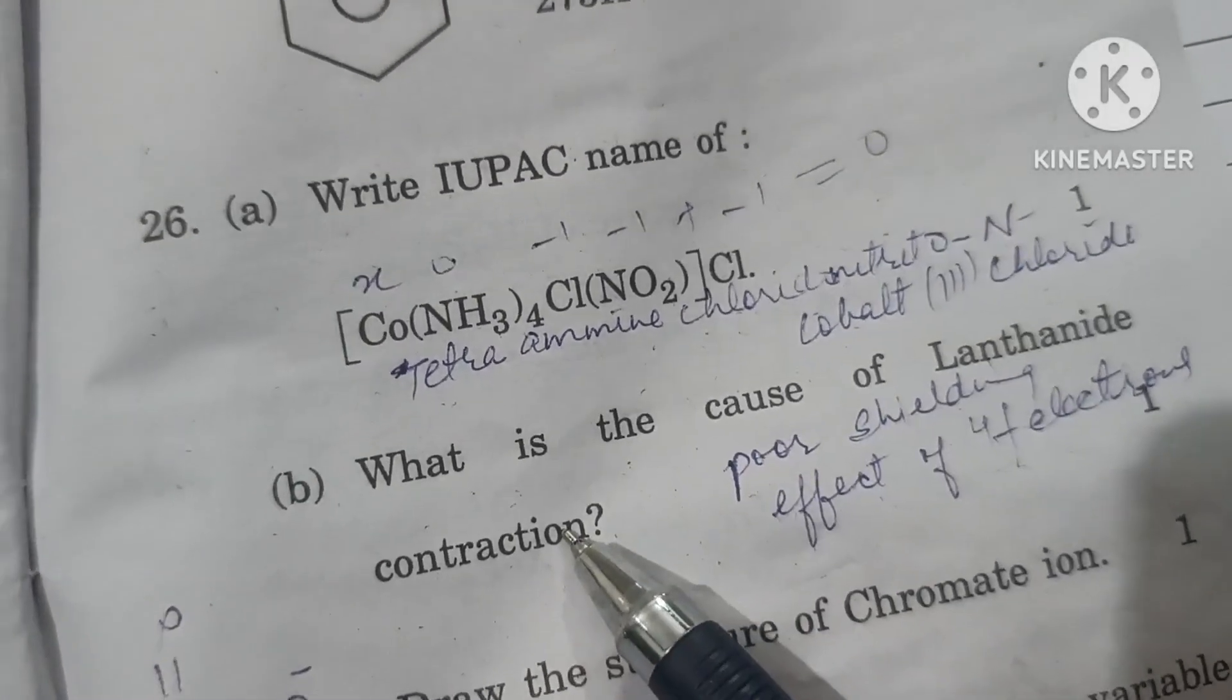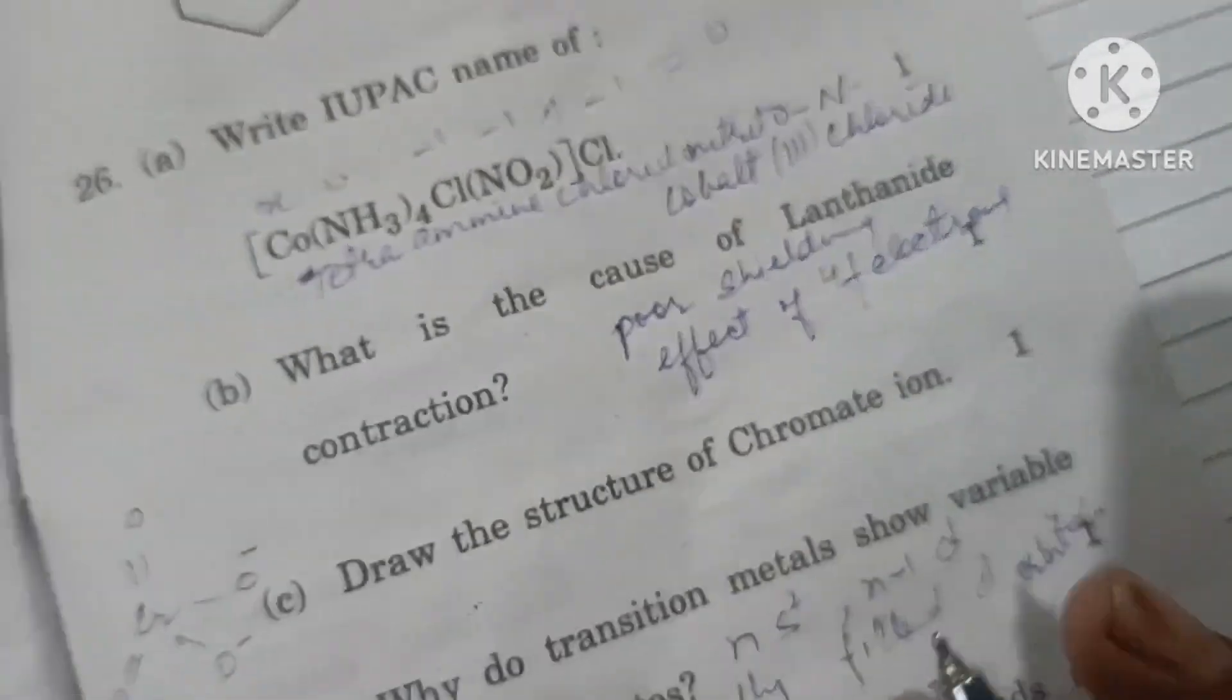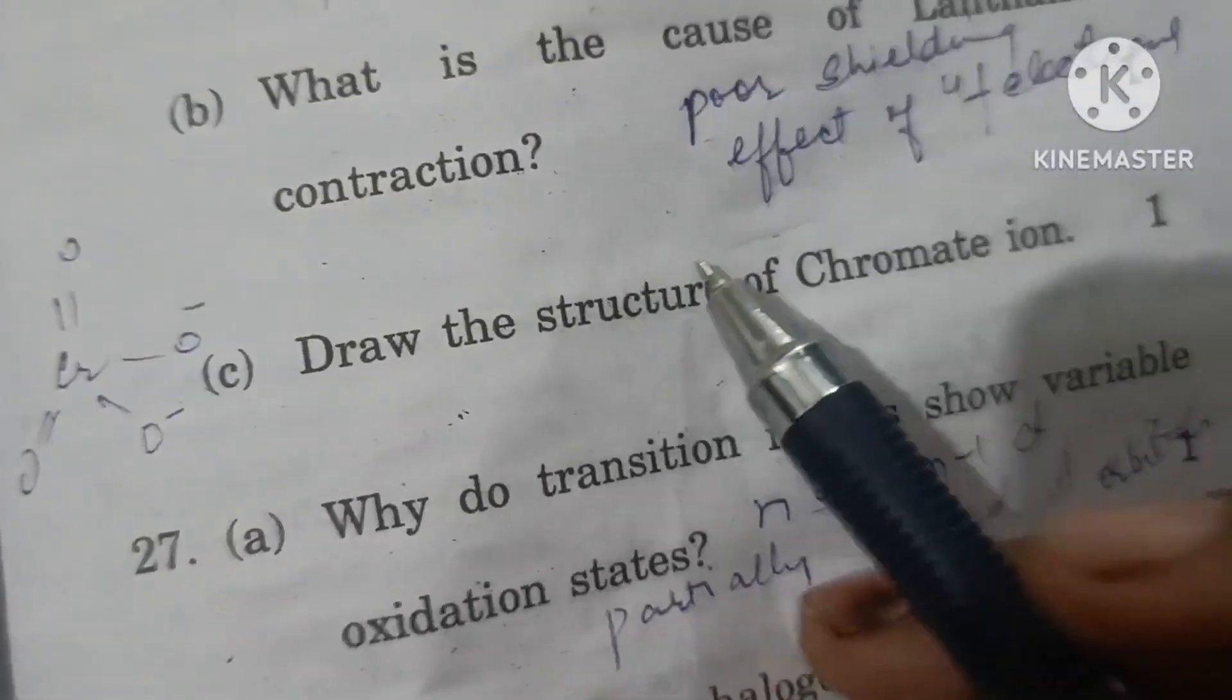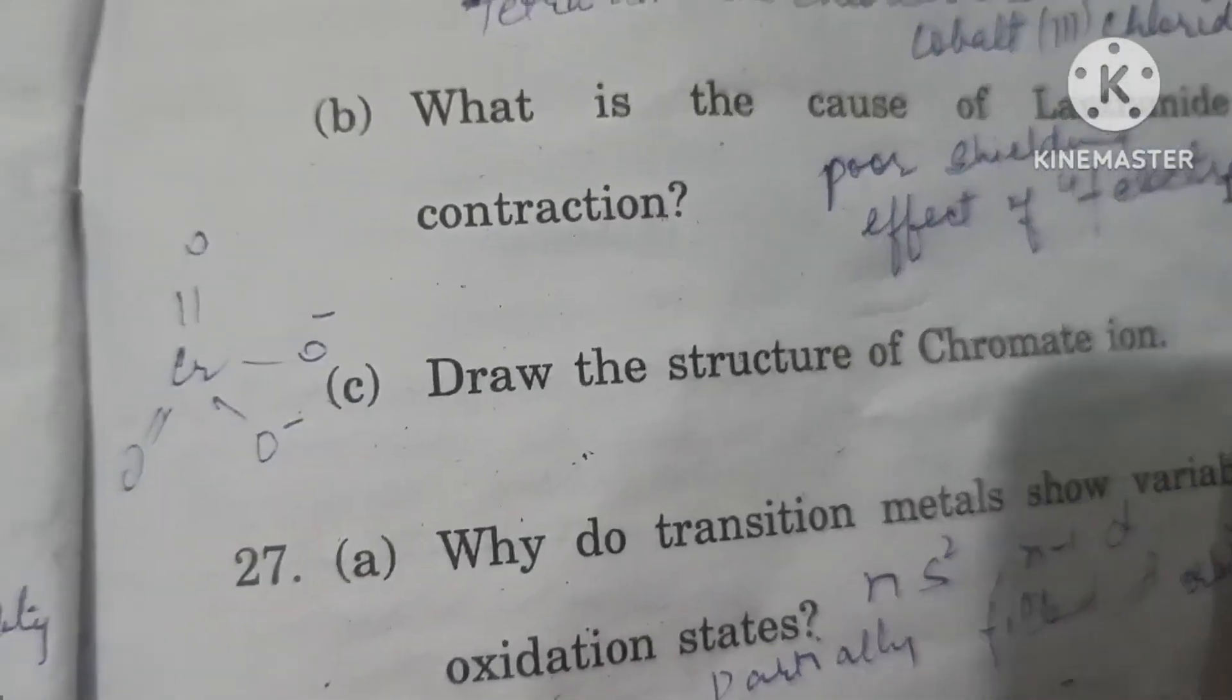What is the cause of lanthanide contraction? Poor shielding effect of 4f electrons causes lanthanide contraction. Size decreases as we move from left to right in the lanthanide series. Draw the structure of chromate ion. Chromium with four oxygens in tetrahedral manner: two by double bond, two by single bond. Single bonded oxygens have negative charge.